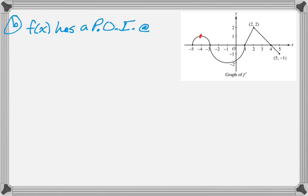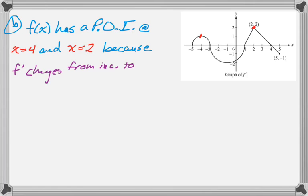So we see one at negative 4, we see one at 2. So I'm going to say at x equals negative 4 and x equals 2, and then I'm going to say that's because f prime changes from increasing to decreasing at those points.